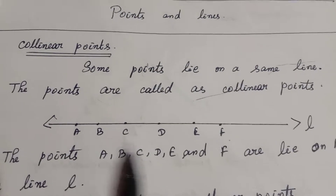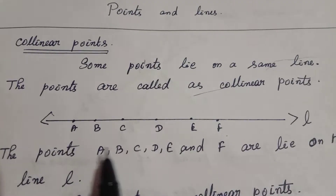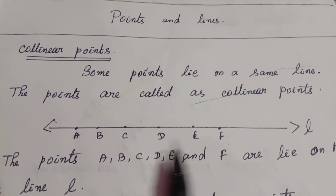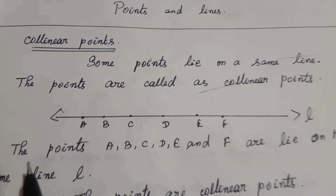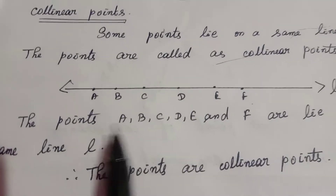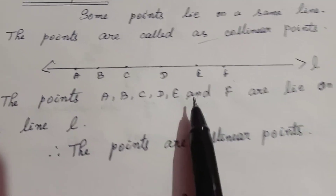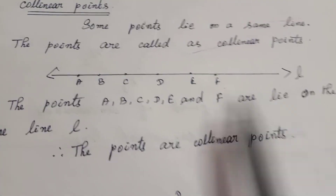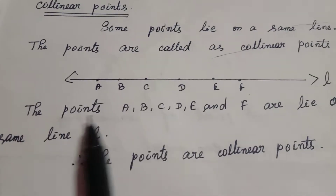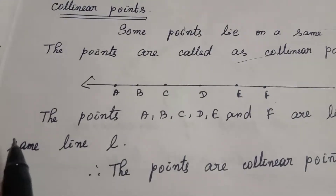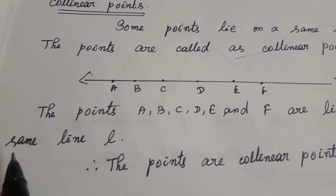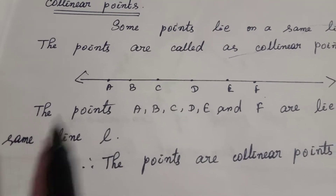So these points A, B, C, D, E, and F are called collinear points. The important thing is that they all lie on the same line L.